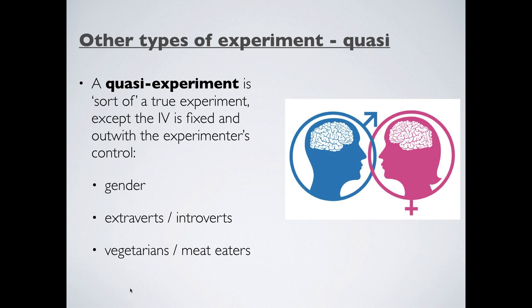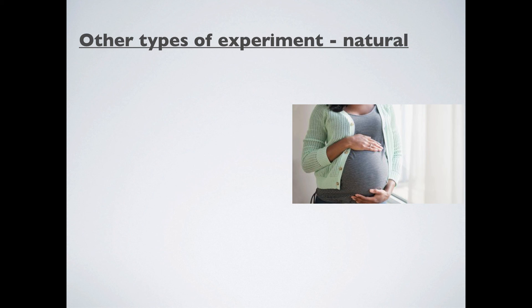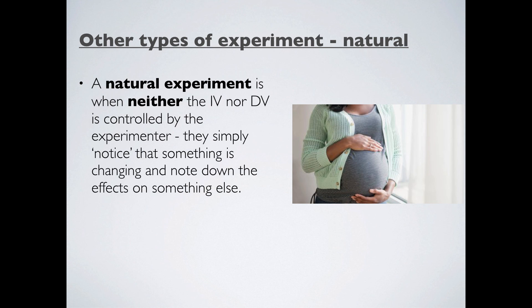The last type of experiment I want to tell you about here is something called a natural experiment. Now, this is quite an interesting one. A natural experiment is sort of an experiment. But neither the IV nor the DV is controlled by the experimenter. And you might be sitting there thinking, well, what's actually happening then if the experimenter is not doing anything? Well, that's a good question. The experimenter has simply noticed that something is changing. So, kind of an IV, something in the world is changing. And then they're interested in that effect on something else. So, it's kind of like the universe is changing an IV and the DV is changing with it. So, we just simply notice that and we write down what happens. I'll give you an example for this one.